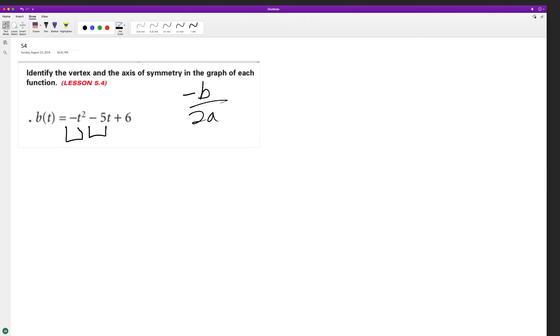In this case, a is negative 1. So we have negative negative 5 over 2 times negative 1, which is 5 over negative 2, which is negative 5 halves.